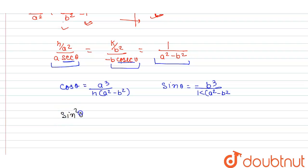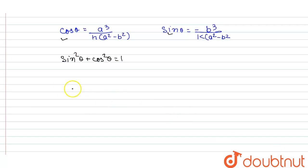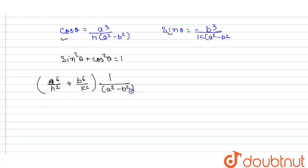Now we use the identity sin²θ + cos²θ = 1. We square the expressions for sinθ and cosθ and add them. This gives: a⁶/h² + b⁶/k², all divided by (a² - b²)², equals 1.